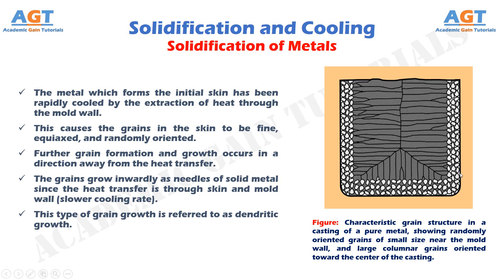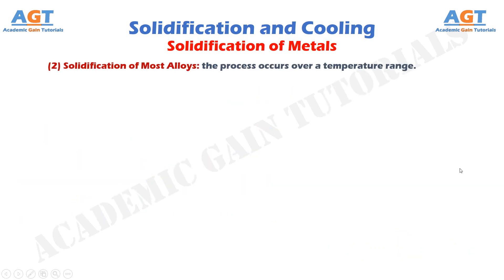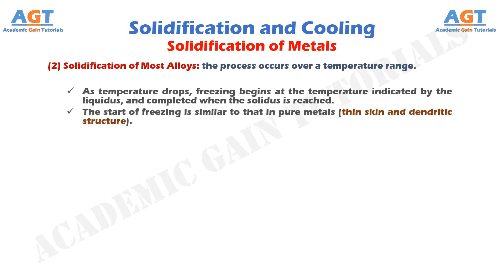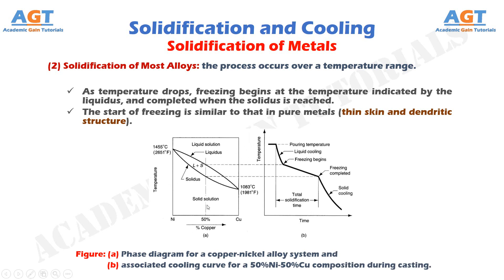2. The solidification of most alloys: the process occurs over a temperature range. As temperature drops, freezing begins at the temperature indicated by the liquidus and is completed when the solidus is reached. The start of freezing is similar to that in pure metals — thin skin and dendritic structure. Figure A shows the phase diagram for a copper-nickel alloy system, and Figure B shows the associated cooling curve for a 50% nickel, 50% copper composition during casting.